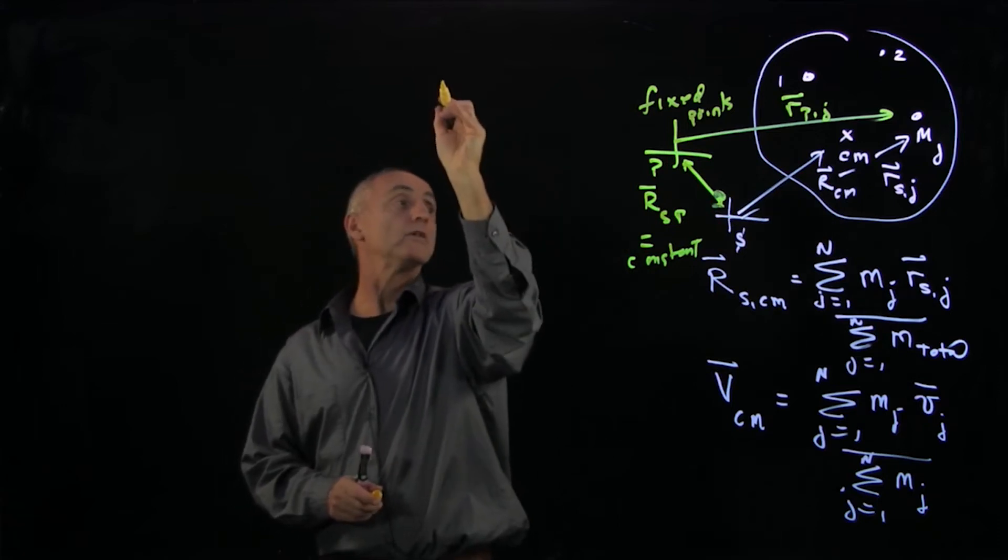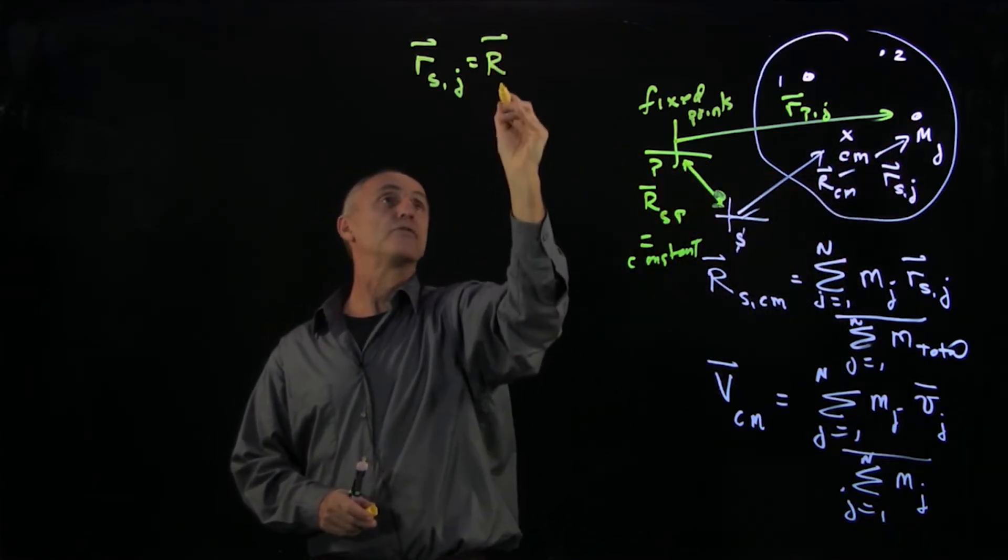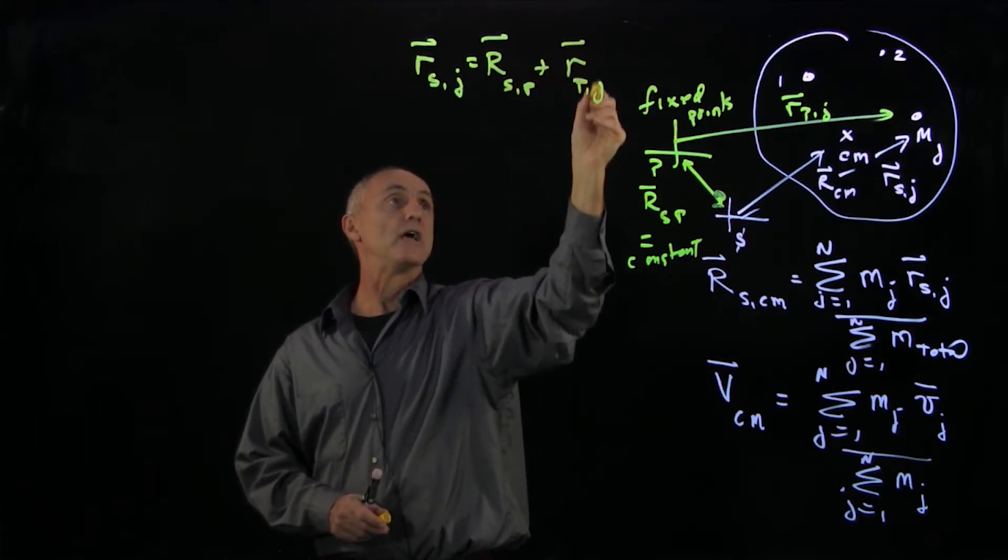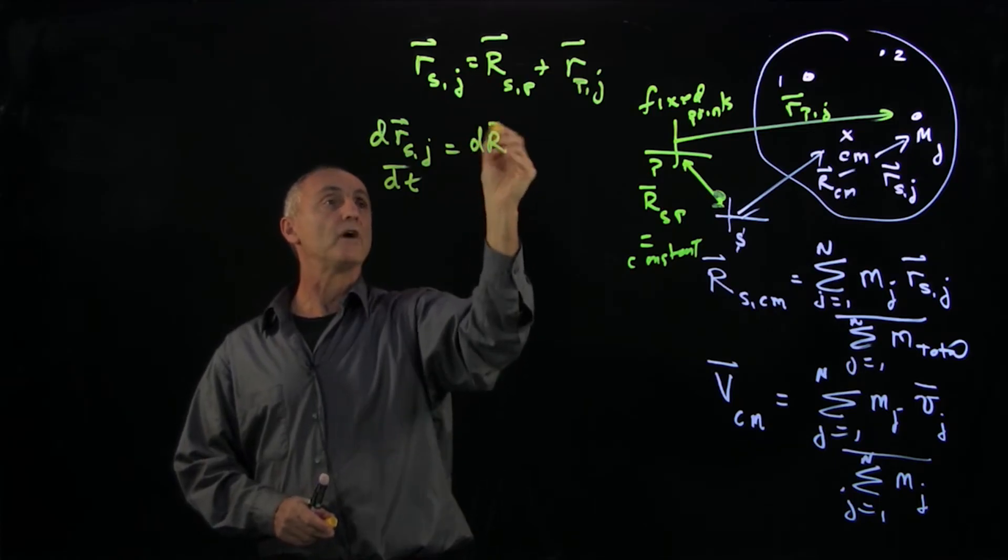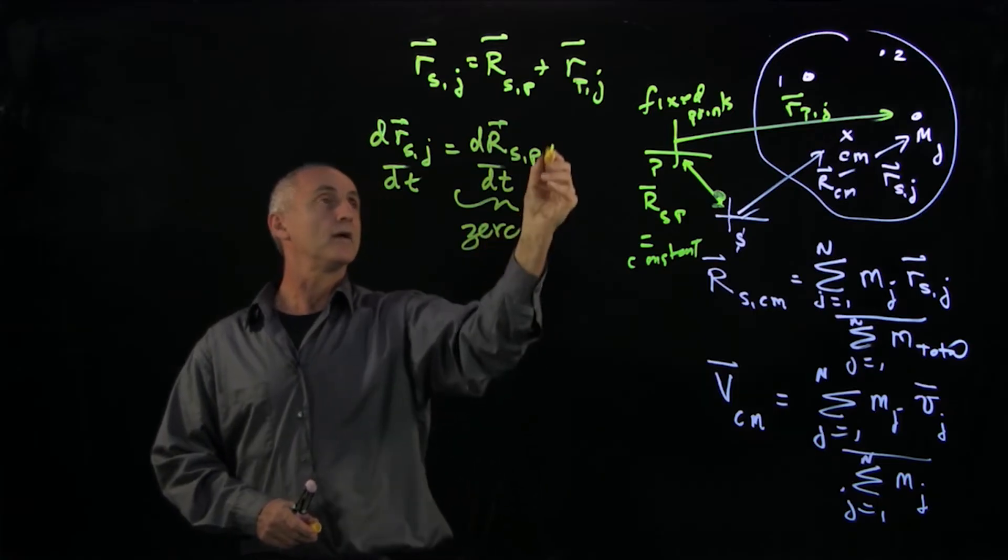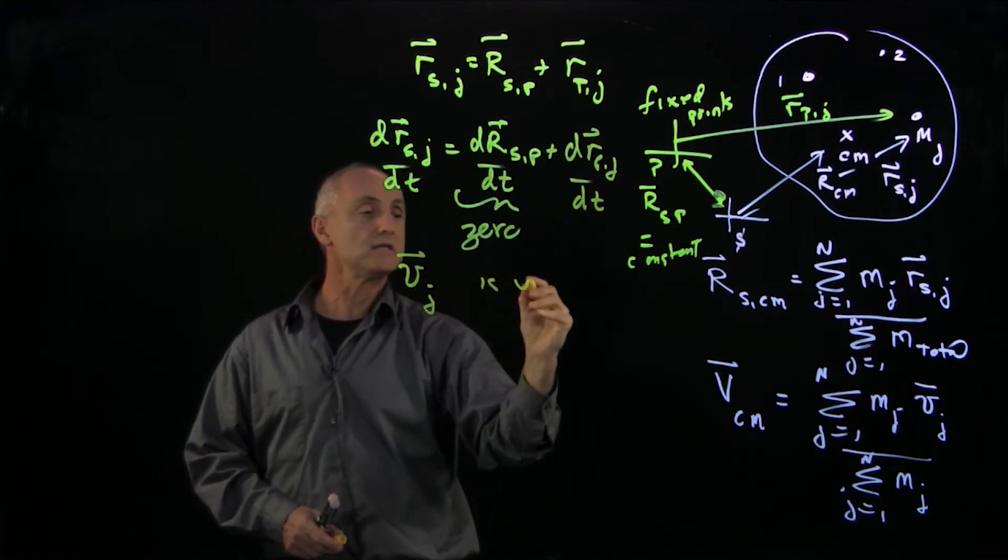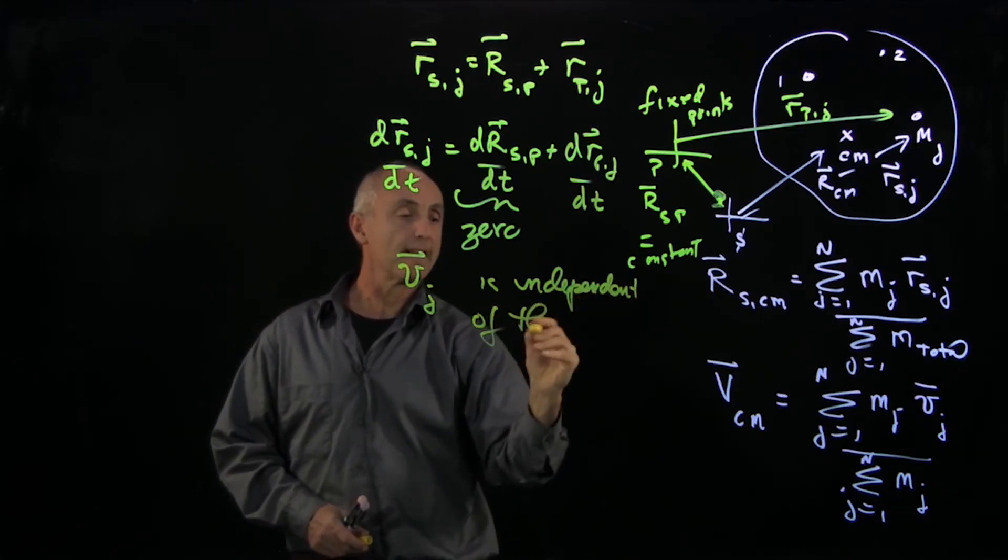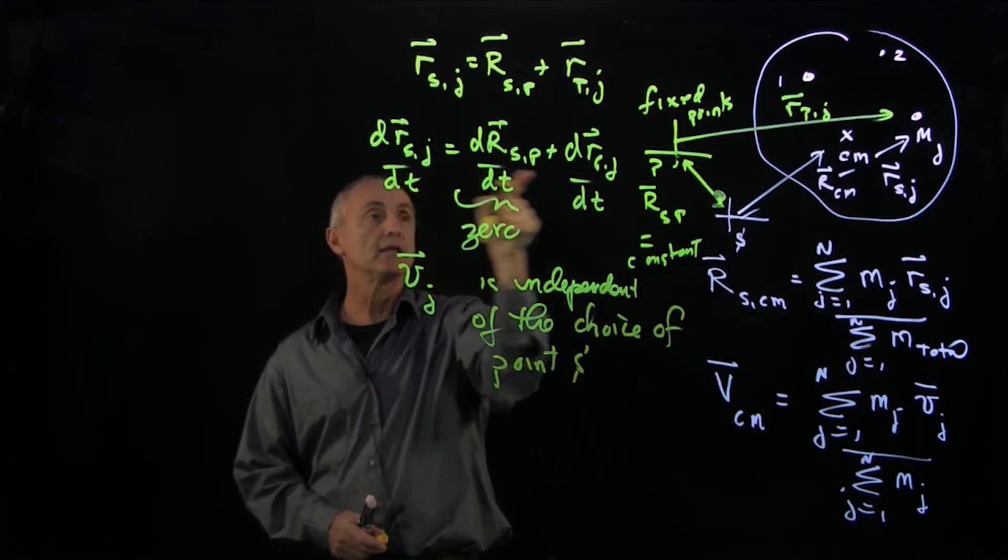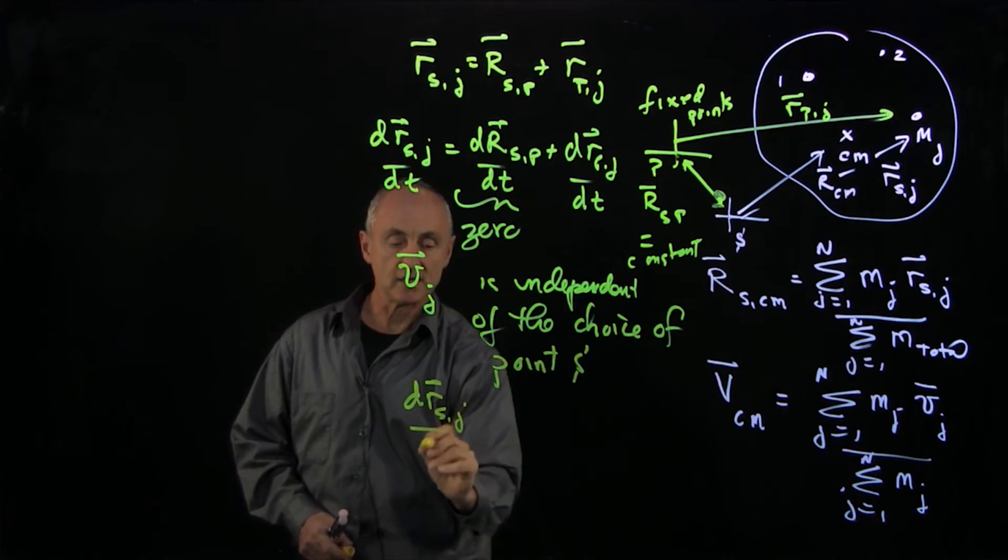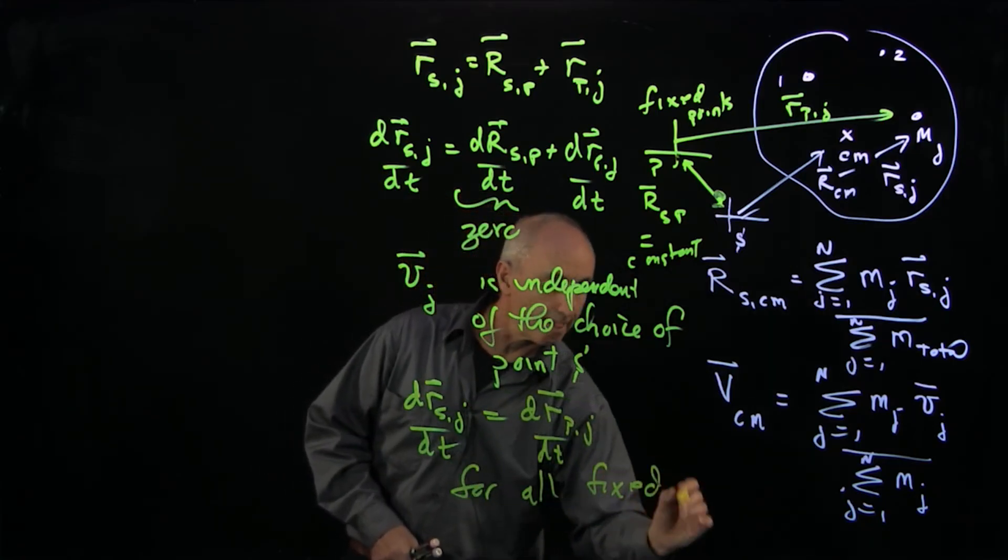Then if you were to draw your vector triangle, which is the position of the object with respect to s, that's this vector, is equal to that fixed position vector from s to p, plus the vector from p to j. And I differentiate this, dr_sj dt. Well, this derivative of a constant vector, this is 0, plus dr_pj dt. And so we see that the velocity j is independent of the choice of point s. You choose any other fixed point, and you get that these velocities dr_sj dt equals dr_pj dt for all fixed points p.